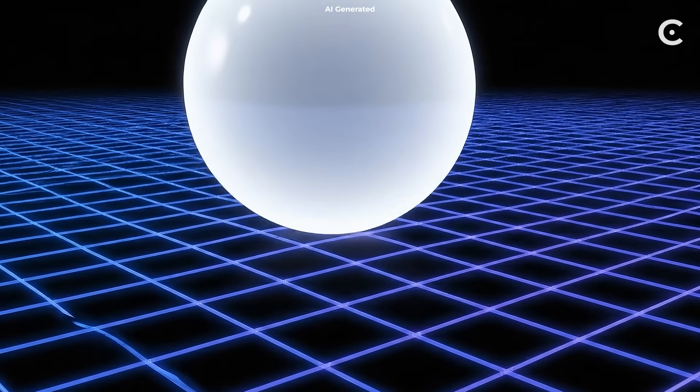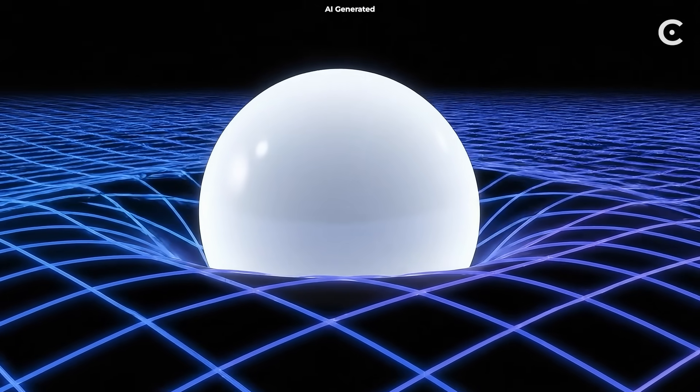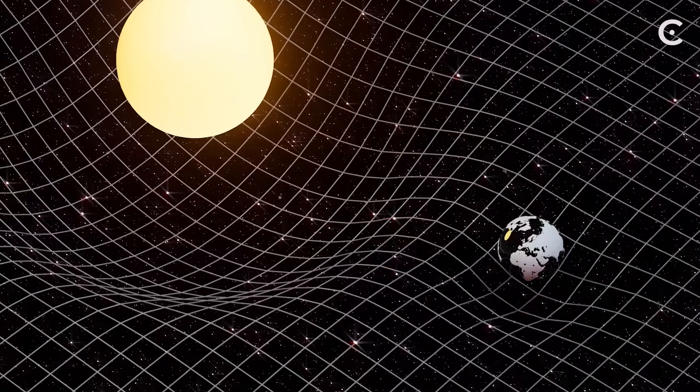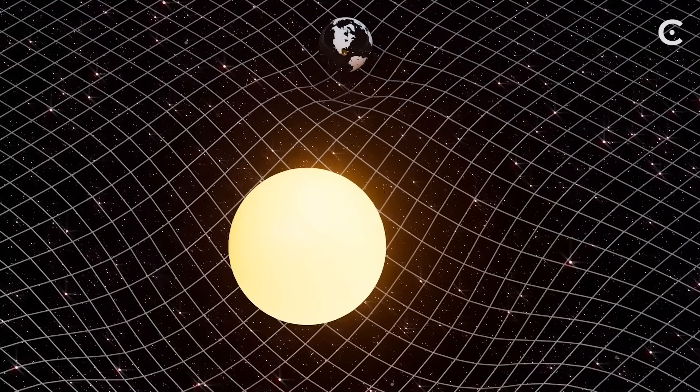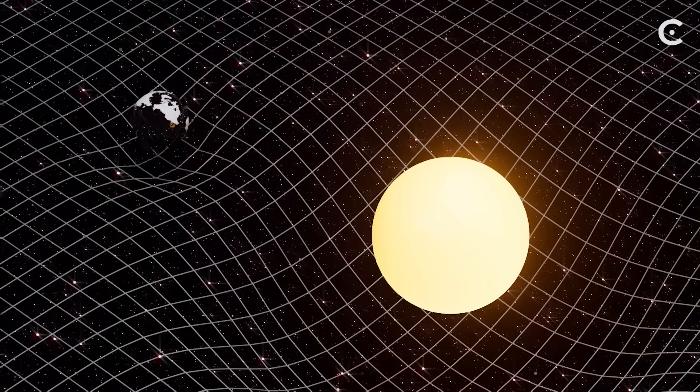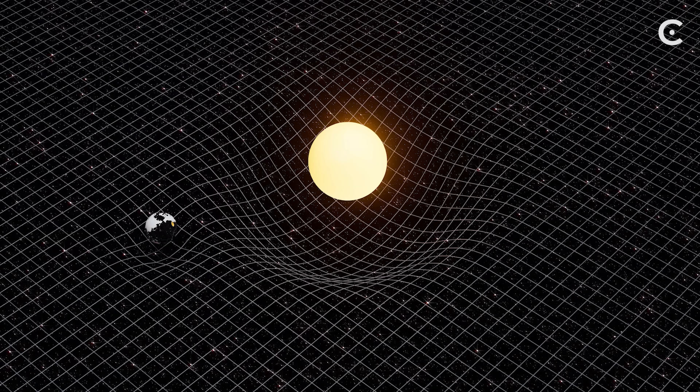Space isn't empty. It behaves more like a flexible fabric that can be stretched and twisted. Right now, you're sitting on a giant bowling ball that's creating a dent in this cosmic trampoline. And that dent is what we call gravity.